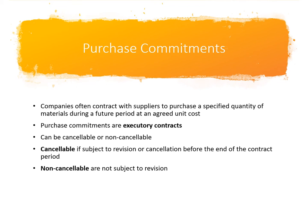Purchase commitments occur when companies contract with suppliers to purchase a specified quantity of materials during a future period of time at an agreed unit price. Take note of keywords: this is a purchase commitment contract, so there should be a buyer and a seller. Our point of view is that we are the buyer, so the contract is about buying or purchase transactions at a specified quantity of materials at an agreed unit price.